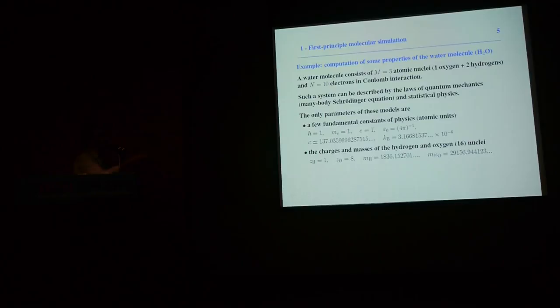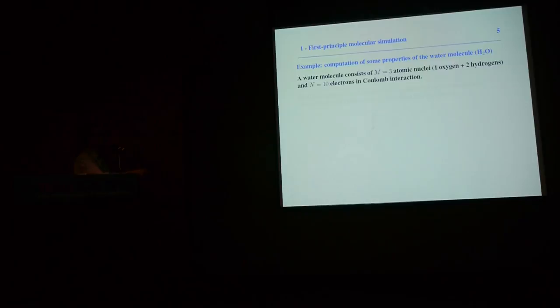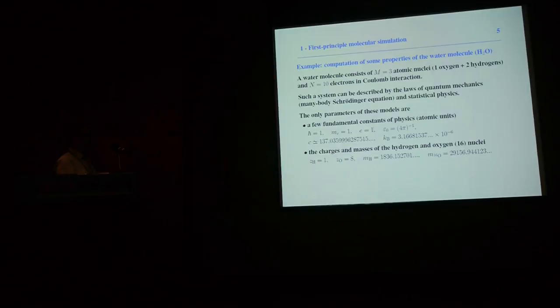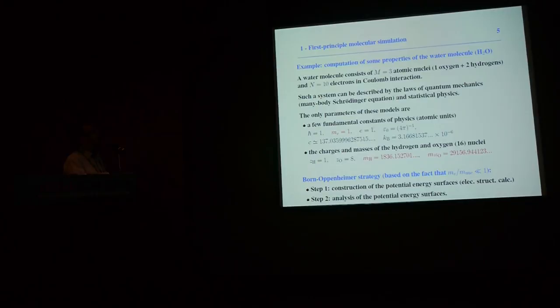As a result, we can compute all the properties of the water molecule, or any property of this very complex system, from its chemical formula. But of course, it's not so easy. We can notice that the mass of the electron is much smaller than the masses of the nuclei, so we have a small parameter there, and we can use this to decouple the electronic and nuclear dynamics.